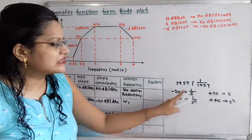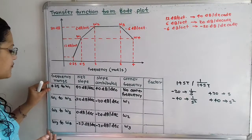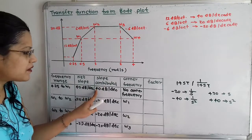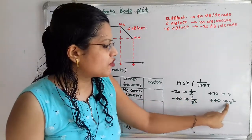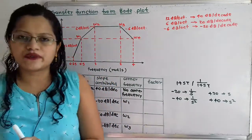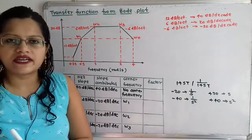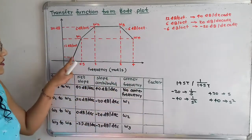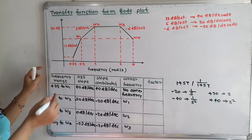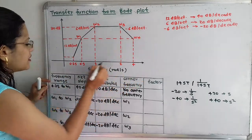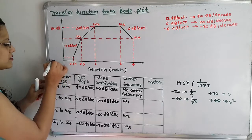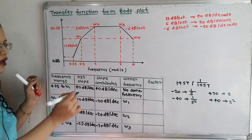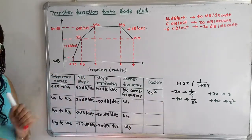For the first frequency range, the slope contributed is plus 40 dB per decade, so S² is in the numerator. We also include a constant K because there is no corner frequency but some constant magnitude. The first factor is K·S².